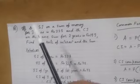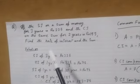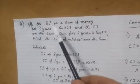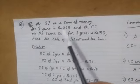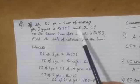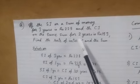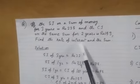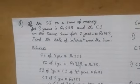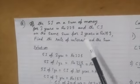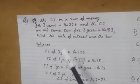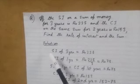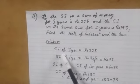Hello students of Class 9, once again we come back to compound interest. This is a sum: if the simple interest on a sum of money for three years is rupees 225 and the compound interest for the same sum for two years is rupees 153, find the rate of interest and the sum. For this sum you need to relate to the previous video on compound interest.